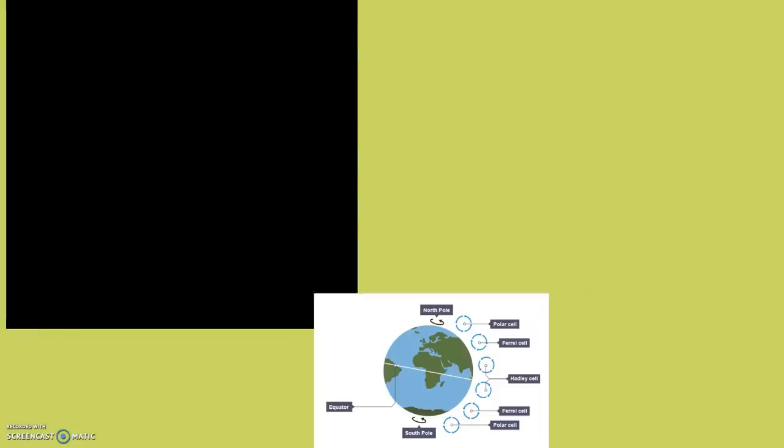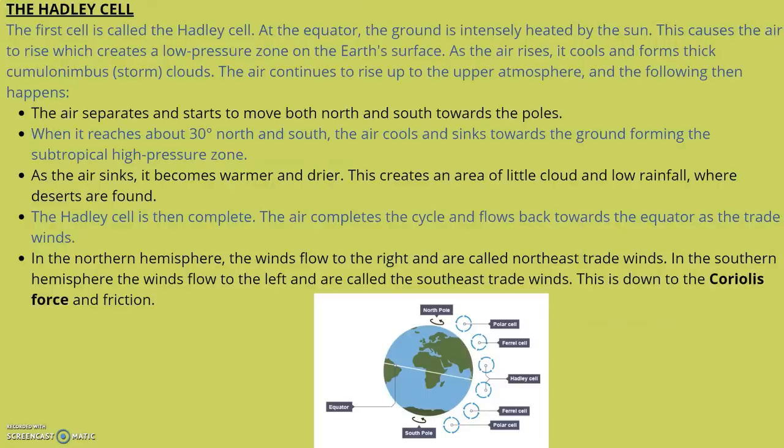Now let's look at Hadley cells. The first cell moving from the equator is the Hadley cell. At the equator, the ground is intensely heated by the sun. This causes air to rise, which creates a low pressure zone on the Earth's surface.